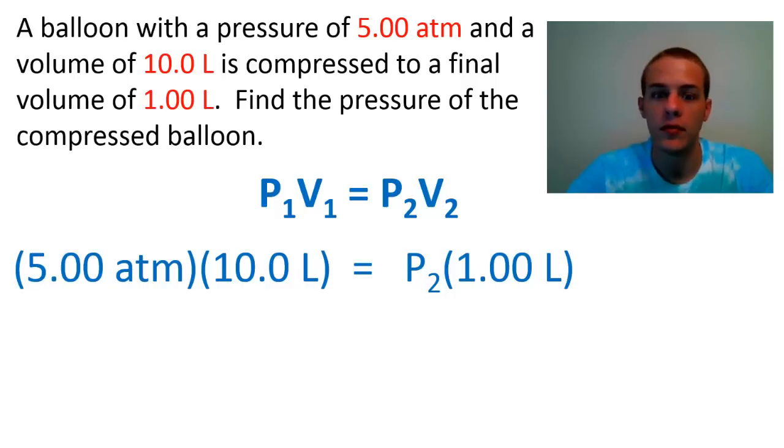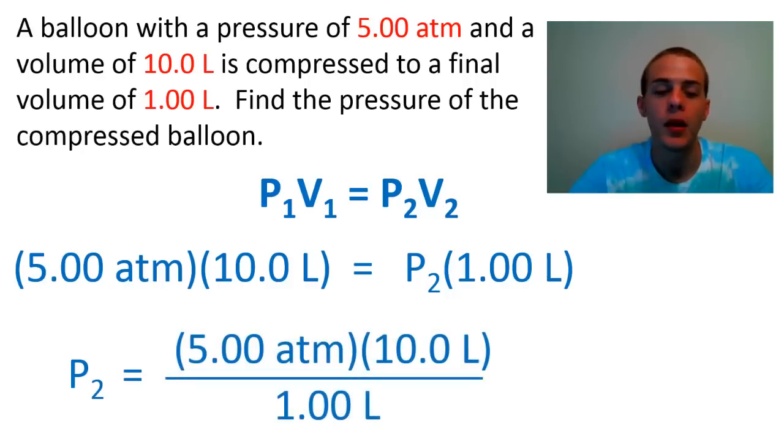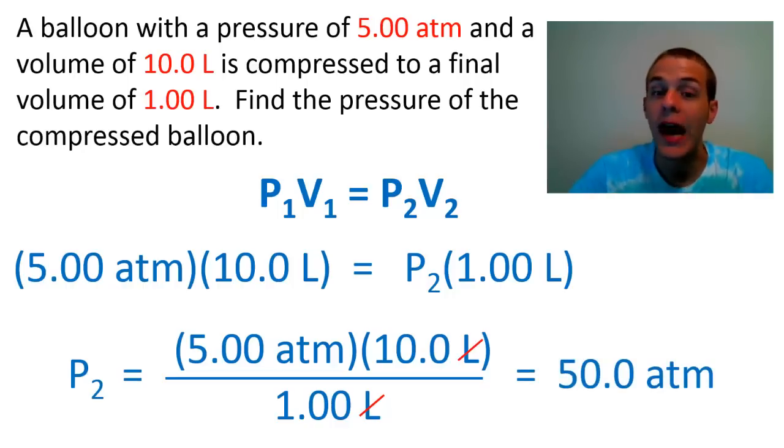And then, of course, to solve for that P2 term, all we have to do is divide both sides of this equation by that 1.00 liters. The liters terms are going to cancel, so we get 5 times 10 taken to 3 significant figures, which is equal to 50.0 atmospheres, which is a very high pressure. So we have a very high pressure balloon right here. So that's basically how you do problems involving Boyle's Law.